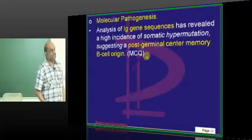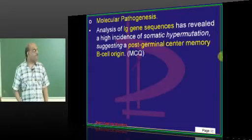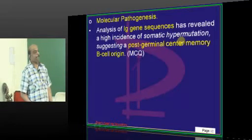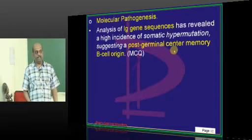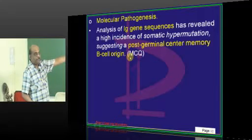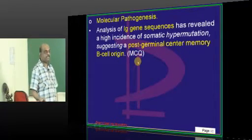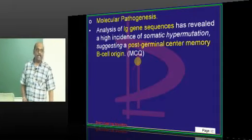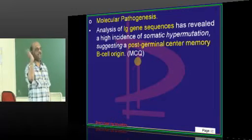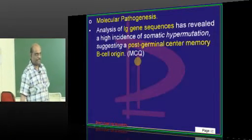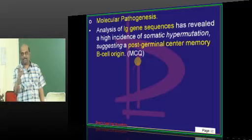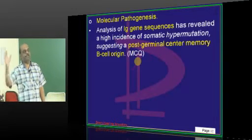What is the molecular pathogenesis? If you analyze the immunoglobulin gene sequences, you discover there are a lot of somatic hypermutations in hairy cell leukemia. That is why the current understanding is that the origin is from a post-germinal center cell. B cells undergo maturation leading to immunological memory — a memory B cell. So it is the post-germinal center memory B cell, mature enough to express the Ig receptor, which is considered the cell of origin for hairy cell leukemia.